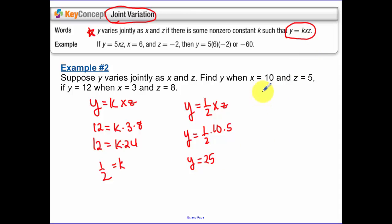Again, the other way to do that is solve this equation up here for your constant of variation. So y over xz is equal to k. So y is 12 when x is 3 and z is 8. That equals, I'm looking for y here when I have 10 times 5. And solving that, you also get 25 for y. So what I'm doing here is I'm showing you guys basically two different ways to do the problem.